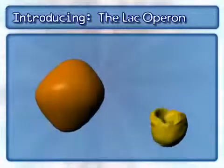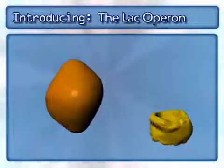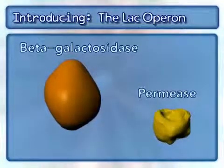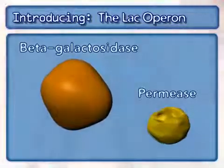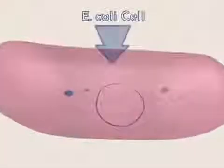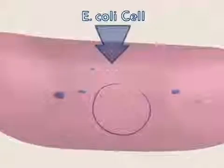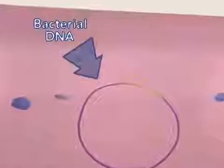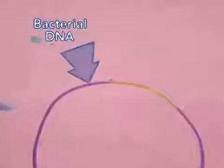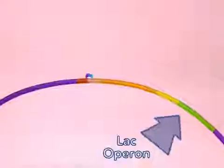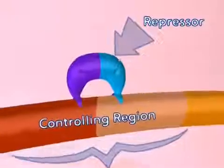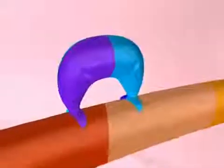This animation will only focus on two of the three proteins encoded by the lac operon: beta-galactosidase and permease. Gene expression can be induced or turned on when a specific inducer molecule appears in a cell. For inducible systems, a repressor molecule prevents gene expression by binding to the upstream controlling region.